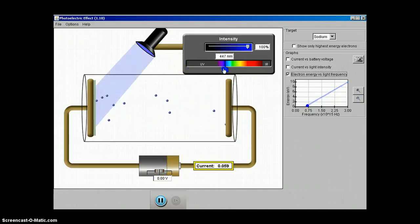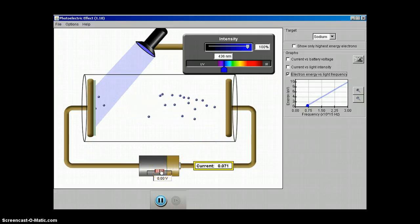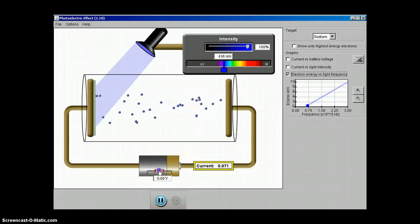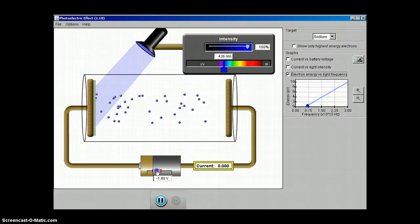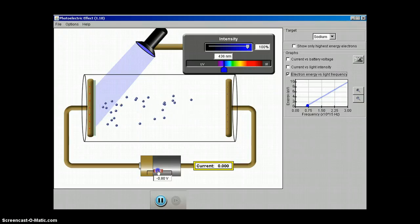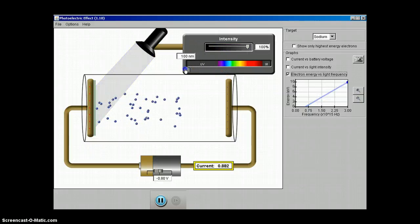We can also demonstrate that. Let's go back down to a visible blue color. Look at the stopping voltage that will be required to prevent the electrons from hitting this negative plate as we slowly turn it up. Not even a volt necessary. However, if we turn this way up as far as we can get in the ultraviolet...